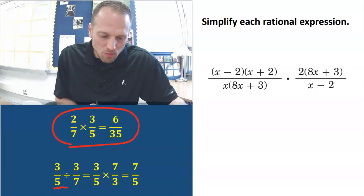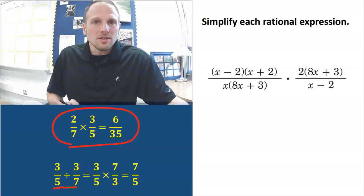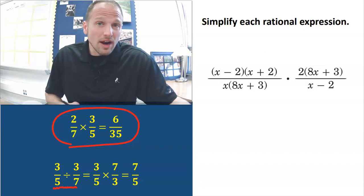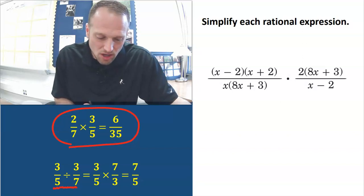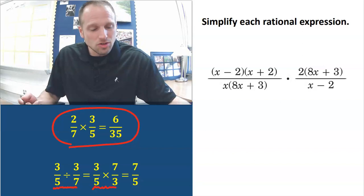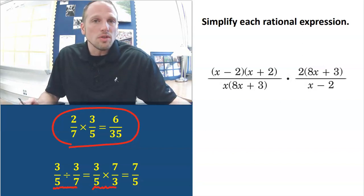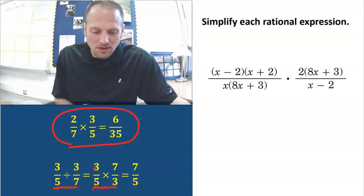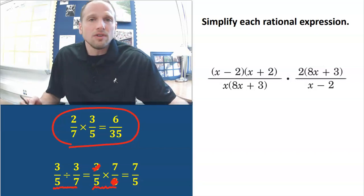If we start with 3 fifths divided by 3 sevenths, a lot of times your elementary teacher would say something like keep, change, flip — where you keep the first fraction, change the sign to multiply, and flip the second fraction. So when we do that, after we flip the second fraction, it's just going to be 7 over 3. One other thing we can do before we multiply straight across is reduce. I have a 3 on the top and the bottom, so those cancel out, and all I have left is 7 over 5.